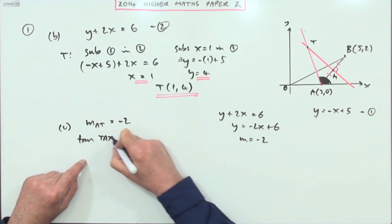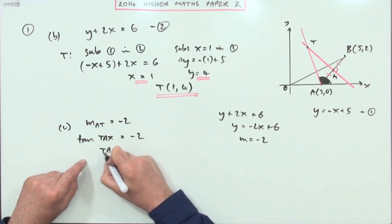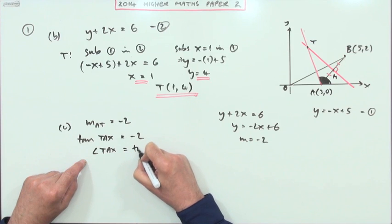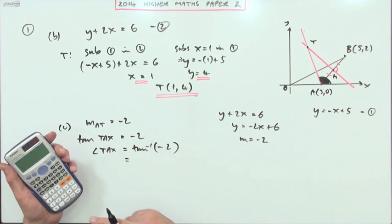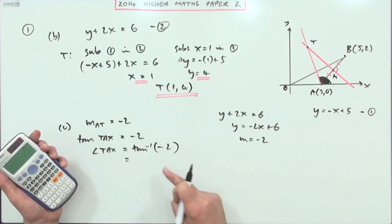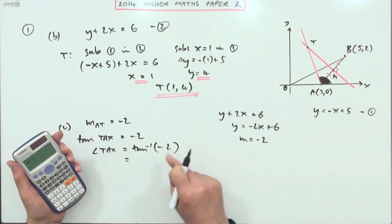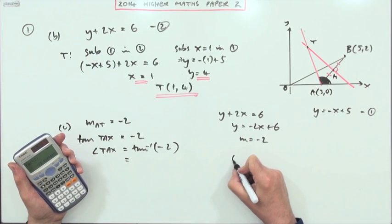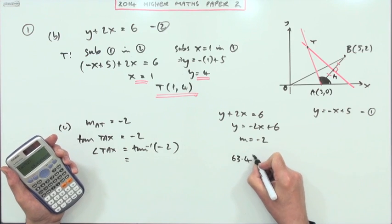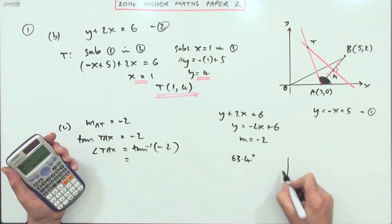So that angle, the angle TAX, will be the inverse tan of -2. Let's just get a calculator out and do inverse tan of -2: shift tan, just putting the 2 in to get the acute angle, and that is 63.4°. And then the CAST diagram to sort out the sign of it all: sine, tan, cos.